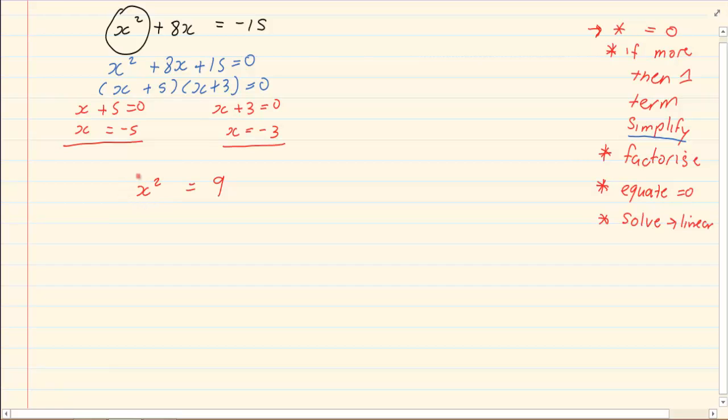We know we have to make it equal to 0 because the square in the question tells us it is quadratic and that is the first rule. So we have x squared minus 9 is equal to 0.